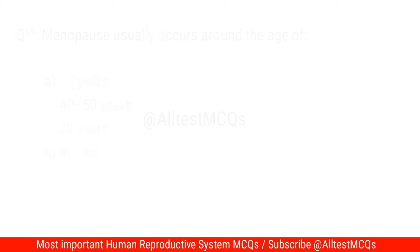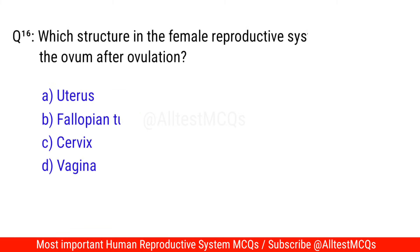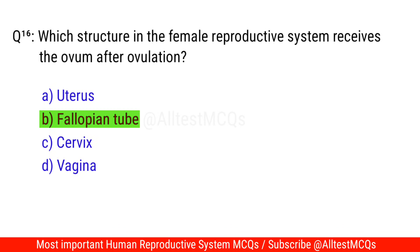Question No. 16: Which structure in the female reproductive system receives the egg after ovulation? The correct option is B. Fallopian tube.